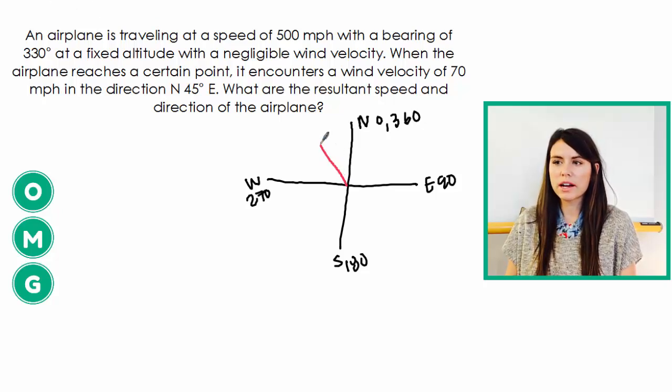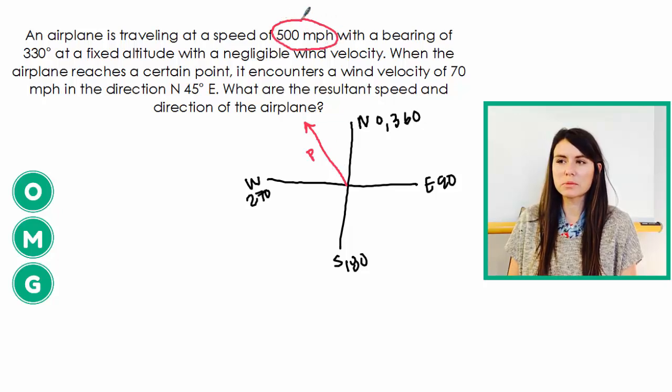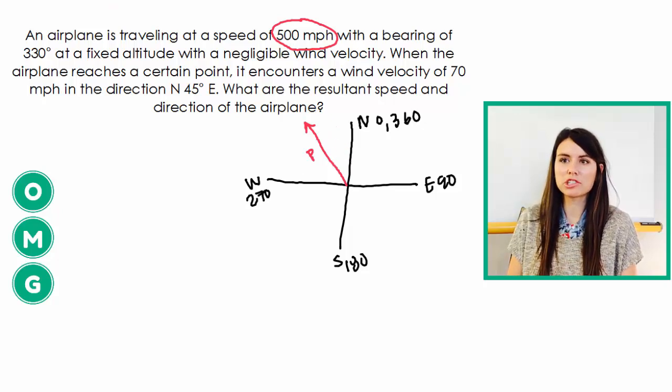So we're about right here. So I'm going to label this as P for the airplane. So the plane has a magnitude of 500 miles per hour. So that's the length of the plane vector and it is 330 degrees. So that's about the right location.